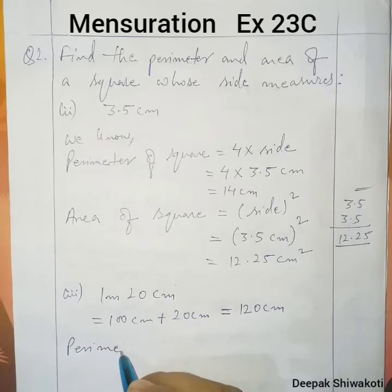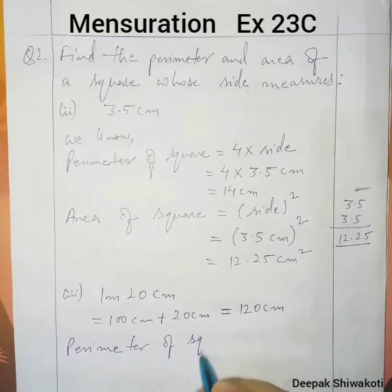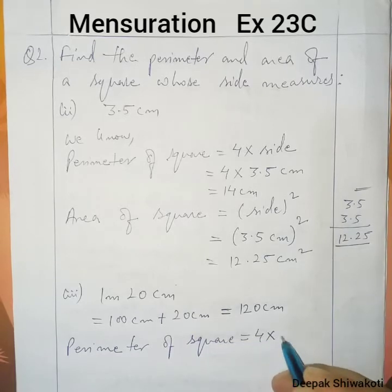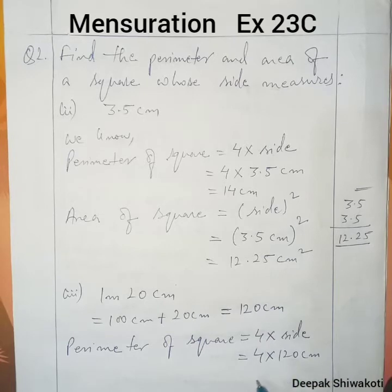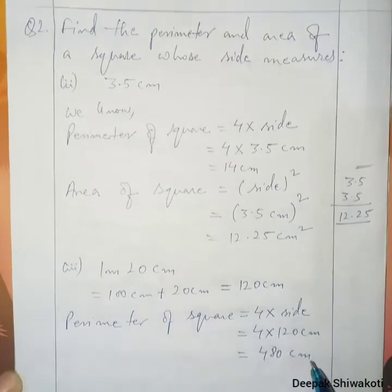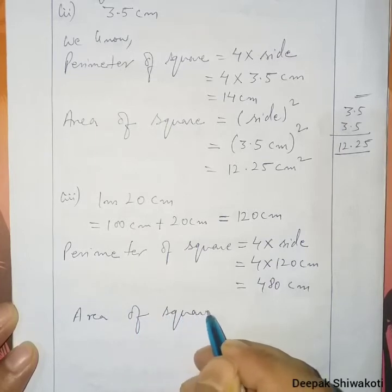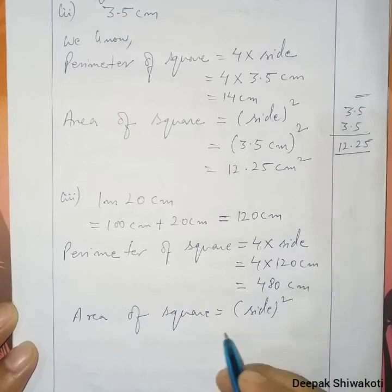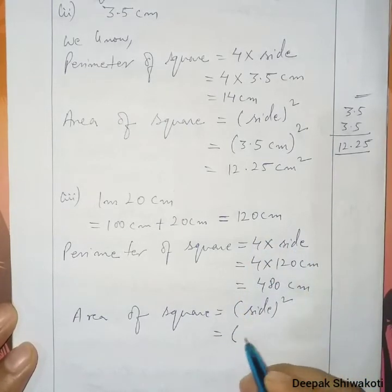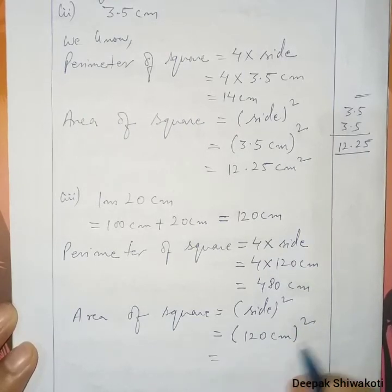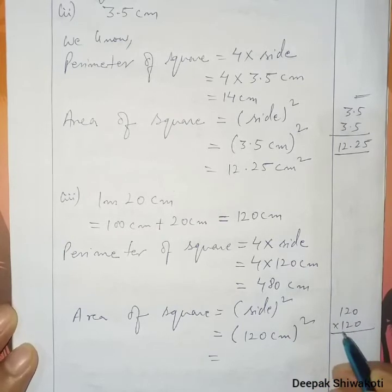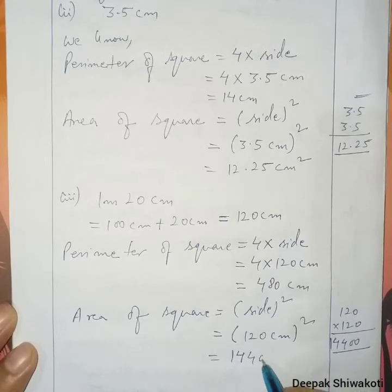Perimeter of square is equal to 4 into side, so it is equal to 4 into 120 centimeter. When we multiply, we get 480 centimeter. Now area of square is equal to side squared. Side is 120 centimeter, so 120 into 120 gives us 14,400 centimeter square as the area of this square.